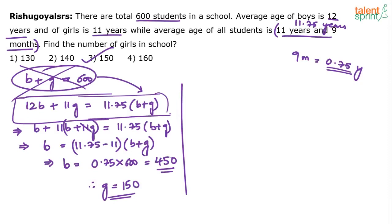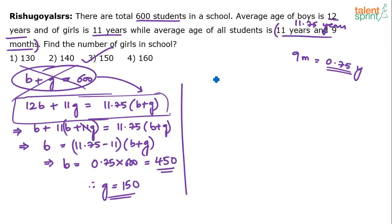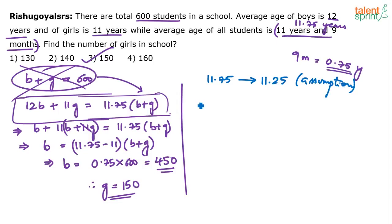Now let's take another example with the same question but change the overall average to 11.25 instead of 11.75. Everything else remains the same: 12b plus 11g equals 11.25 times (b plus g). Applying the same approach: b plus 11(b plus g) equals 11.25 times (b plus g).